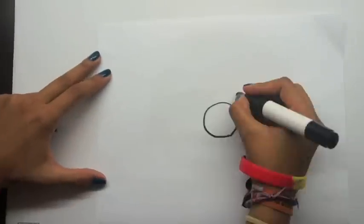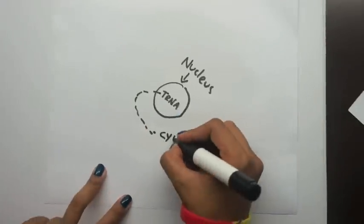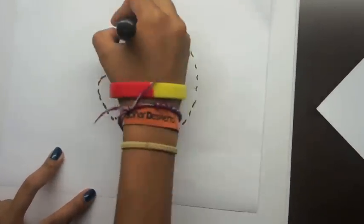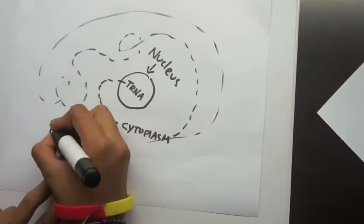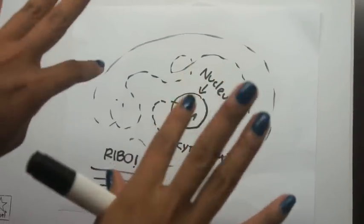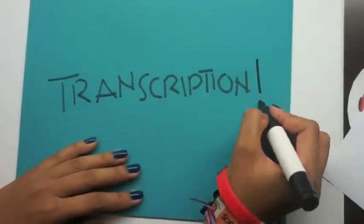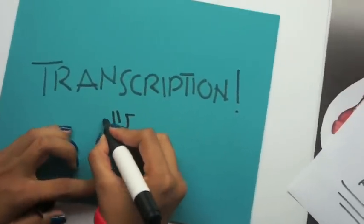This strand of RNA called transfer RNA then leaves the nucleus and travels out into the cytoplasm until it goes into the ribosome!